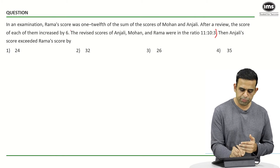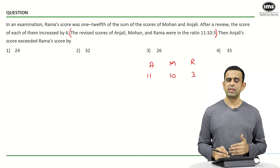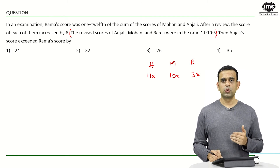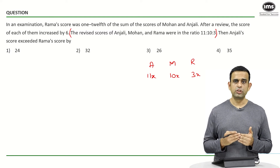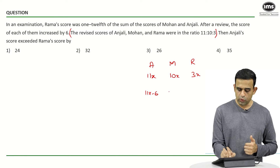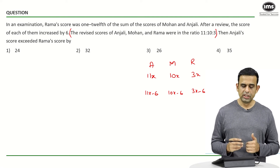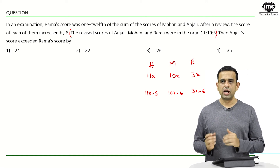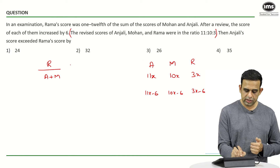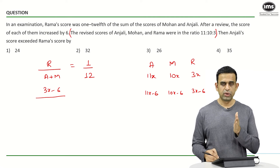Let's look at another approach. In this second method, we start from the post-review sentence. The post-review ratio of Anjali, Mohan, and Rama is 11 is to 10 is to 3, so I take their post-review scores as 11x, 10x, and 3x. Since each score increased by 6 during review, the pre-review scores are 11x minus 6, 10x minus 6, and 3x minus 6 respectively. From the first condition, pre-review Rama divided by Anjali plus Mohan equals 1 by 12, so (3x minus 6) over (21x minus 12) equals 1 by 12.